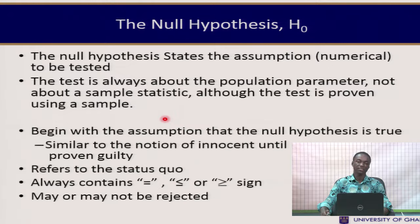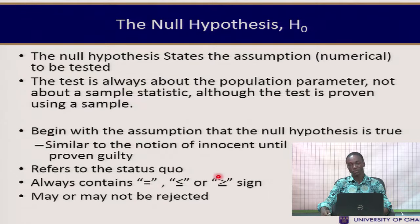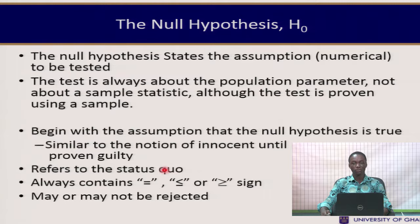The null hypothesis always contains some form of equality — mathematically, it would contain equal to, greater than or equal to, or less than or equal to signs. It is always the situation upheld until we have evidence against it, and therefore always refers to the status quo. Also, the null hypothesis may or may not be rejected.